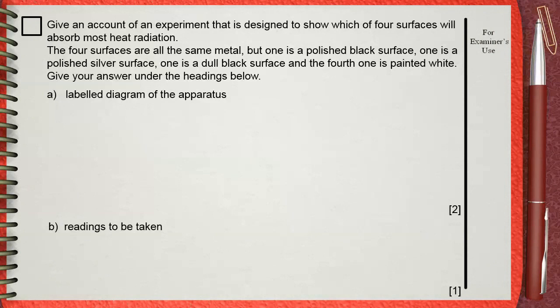Give an account of an experiment that is designed to show which of four surfaces will absorb most heat radiation. The four surfaces are all the same metal, but one is a polished black surface, one is a polished silver surface, one is a dull black surface, and the fourth one is painted white. Give your answer under the headings below.